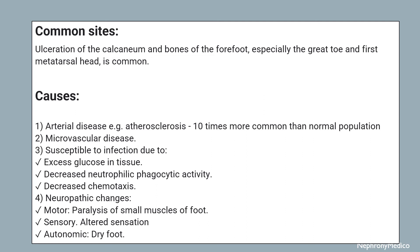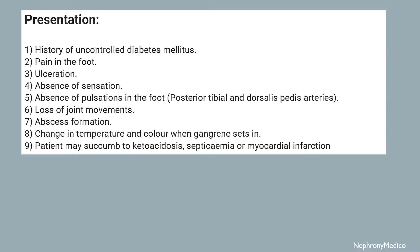Presentation: there is a history of uncontrolled diabetes mellitus, pain in the foot, ulceration, absence of sensation, and absence of pulsation in the foot — usually in the posterior tibial and dorsalis pedis arteries. There is loss of joint movements, absence of sweating, change in temperature and color. When gangrene sets in, the patient may succumb to ketoacidosis, septicemia, or myocardial infarction.